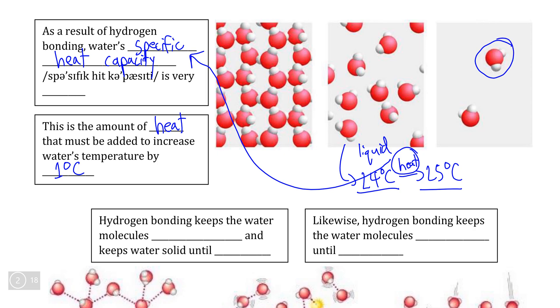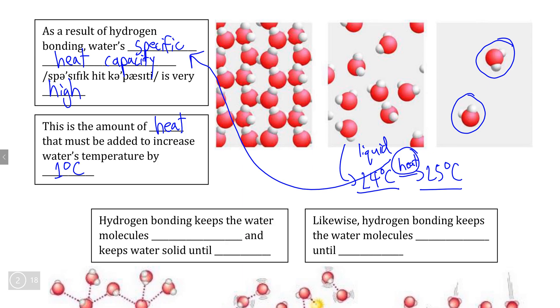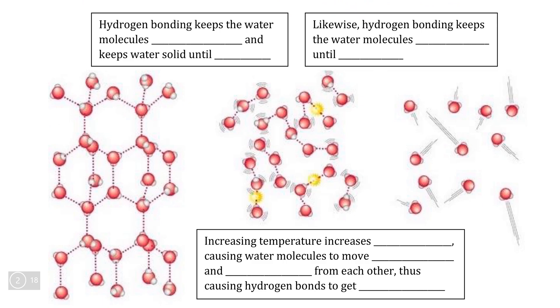And compared to other substances that are of a similar size and atomic mass, water has an unusually high specific heat capacity, meaning that it takes much more heat to increase water's temperature compared to other substances of similar mass. And lo and behold, the reason that explained that is because of hydrogen bonding.